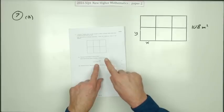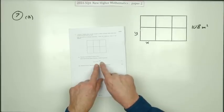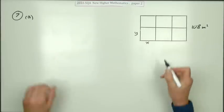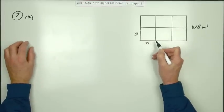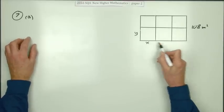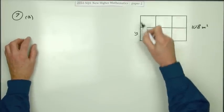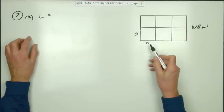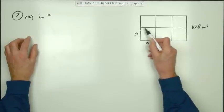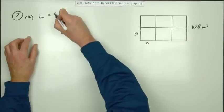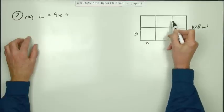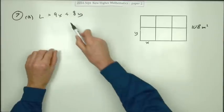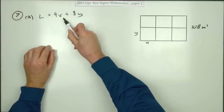First part says show that the total length of fencing here is given by this expression. Well, it's just simple second year algebra and geometry. What have you got here? You've got a rectangle split up into these six parts. If x is this portion, you've got three, six, nine lots of x, and you've got one, two, four, six, eight lots of y. That's the expression for the length.